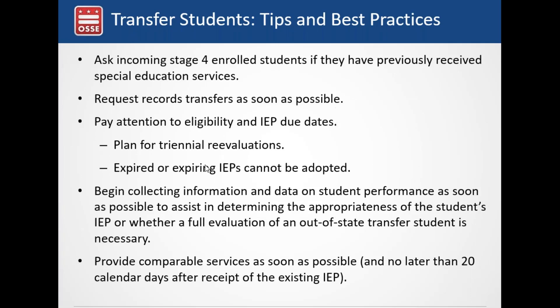Some tips on transfer students: ask incoming students who are Stage 4 enrolled if they have previously received special education services. Do not ask prior to Stage 4 enrollment because of prohibitions against non-discrimination in the enrollment process — you cannot ask in the application process whether students have received special education services. OSSI pulls that information out of lottery systems to reduce discrimination risk. After Stage 4 enrollment, when you reach out to the parent for standard enrollment documents, ask if the student has an IEP.